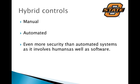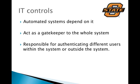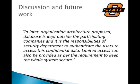Hybrid controls include both manual and automated activities. Some verifications are done manually and some authentications are ensured by the automated system. These controls provide even more security as they involve both human and software elements. IT controls are the controls on which automated systems depend — the automated system works according to settings provided by the IT systems. These controls act as a gatekeeper to the whole system, responsible for authenticating different users within and outside the system.